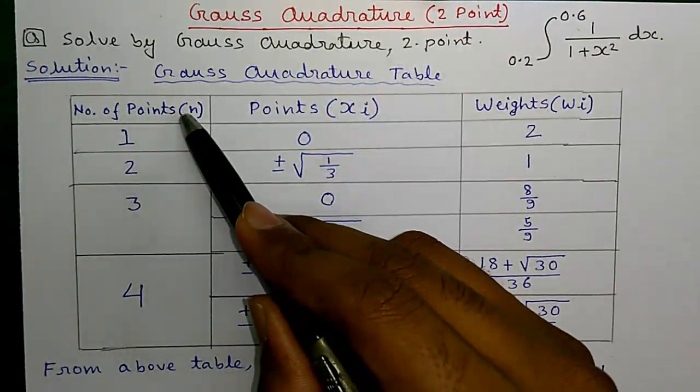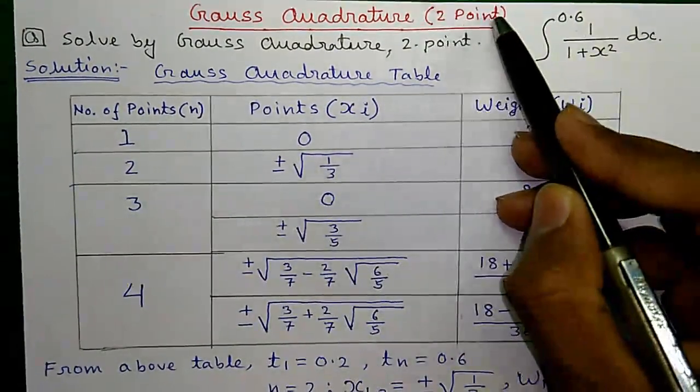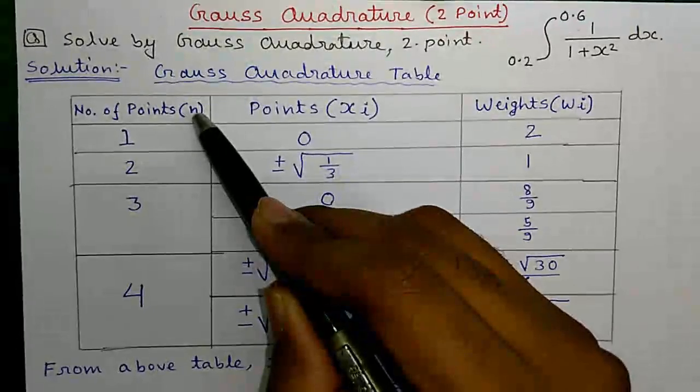First column is number of points n. So, here we are using two-point method. So, n equals to 2.